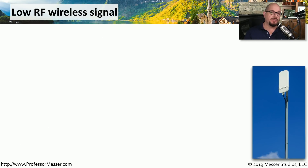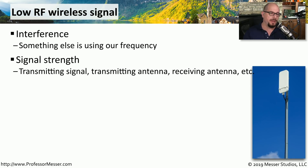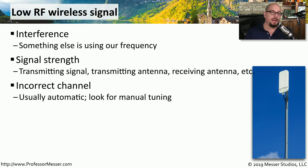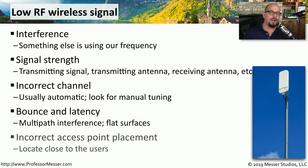Wireless networks can be even more difficult to troubleshoot because more things can go wrong. You could have interference from a third-party device using the same frequencies. You might also run into issues with signal strength — check the transmitting signal from your access points, the transmitting antenna, and how the receiving antenna is used on your workstation. Make sure you're on the same channel as your access point; it usually sets this automatically, but if you're setting channels manually, ensure they match. Older access points may not handle multi-path interference well, and you may want to consider moving the access point closer to users.